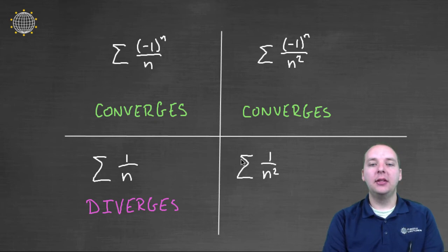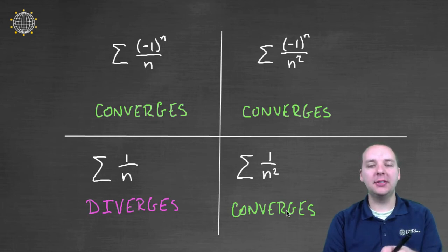But look at the last guy. The sum of one over n squared. That's also a p-series, but he still converges.